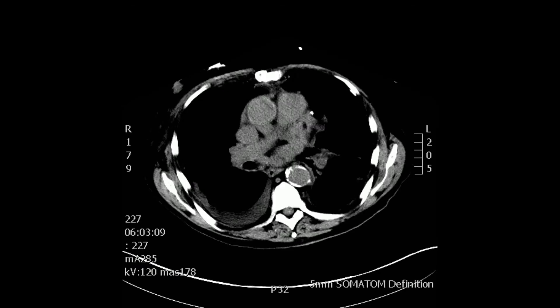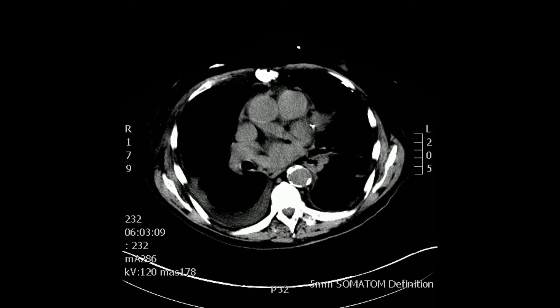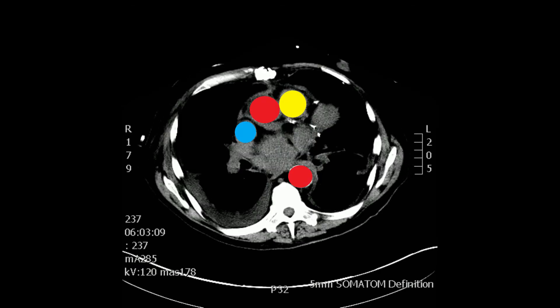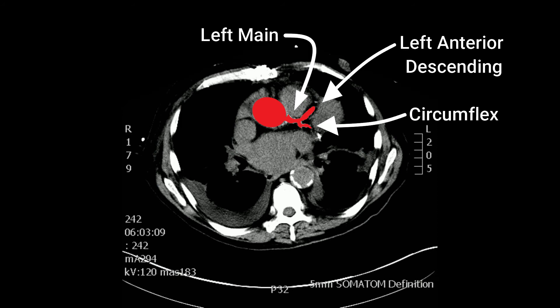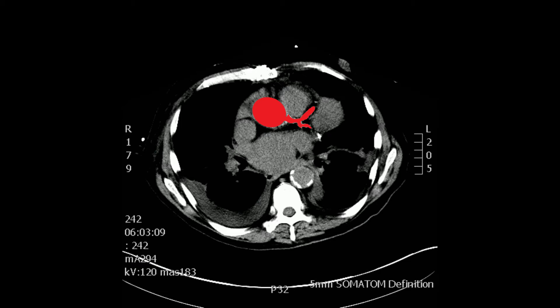Again, the mediport as it disappears, and the superior vena cava in blue, ascending aorta, main pulmonary artery in yellow, and descending aorta posteriorly in red. You can see the left main coronary artery with its left anterior descending and circumflex branches arising from the aorta — heavily calcified left main and branches.